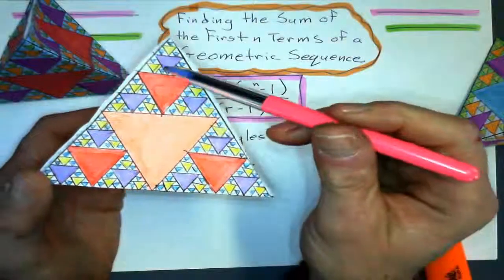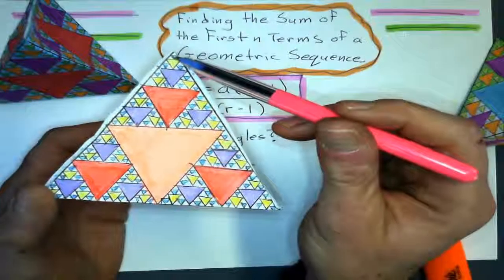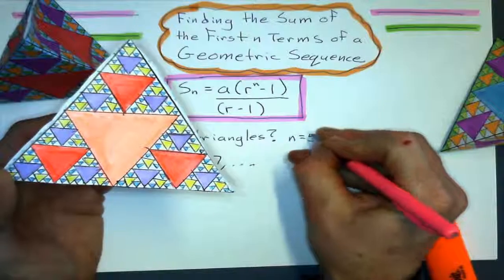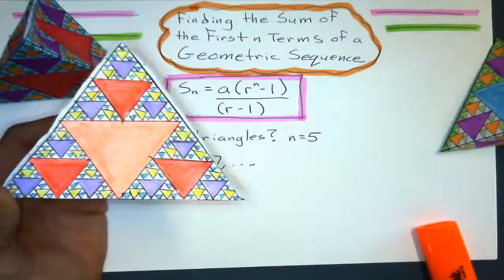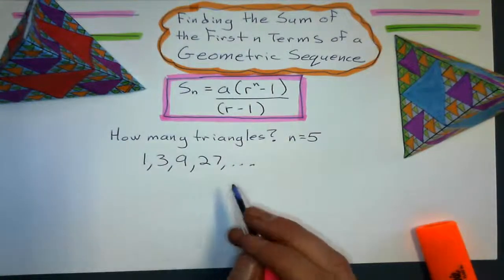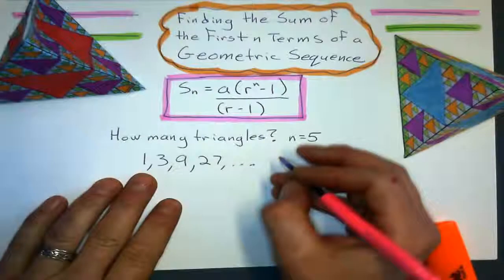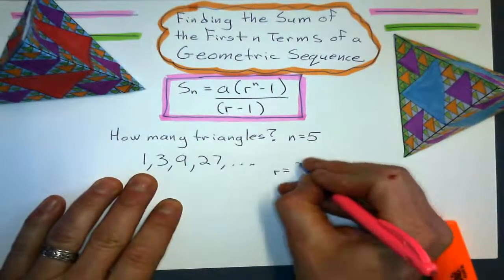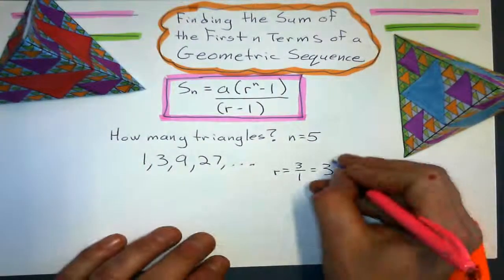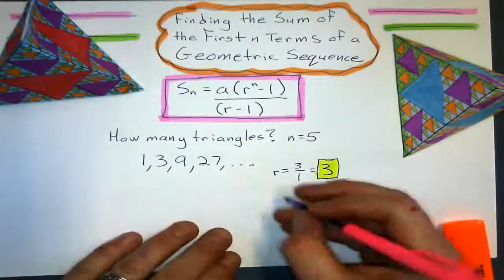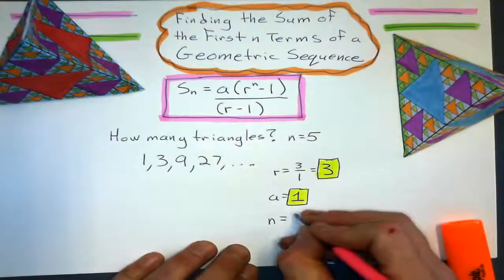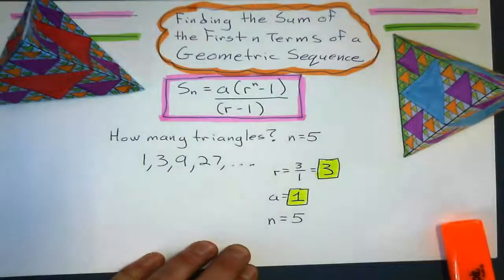But how many times does that go up? It goes up all the way to the 5th term — all the way to the blue ones, which would be the 5th term. With my sequence, I now want to know a series. What's my common ratio? It's going to be 3 divided by 1, so my common ratio is 3. My first term is 1, and I want to find out the sum of the first 5 terms.